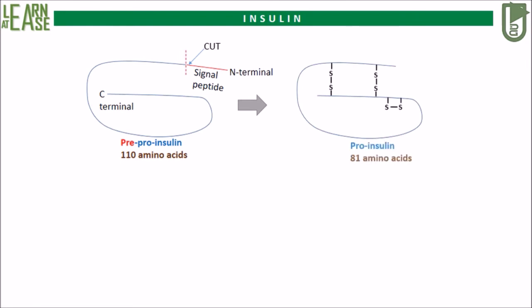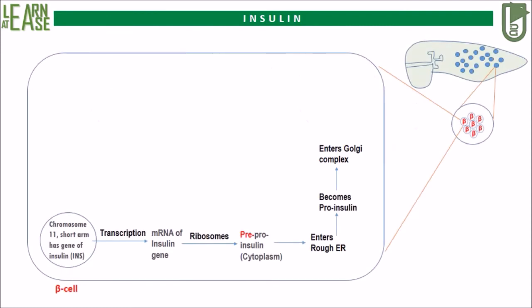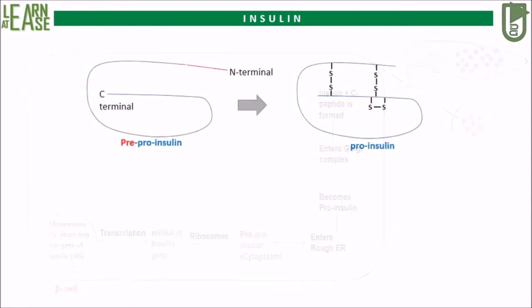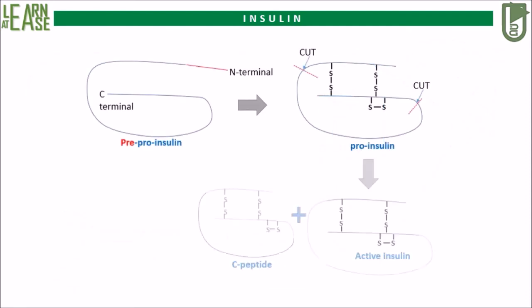Once these modifications occur, it becomes pro-insulin. It is then transported to the Golgi apparatus where it is processed by a series of proteases to form mature insulin. Here the pro-insulin is cleaved at two different locations by proteases, as shown in the animation, to yield C-peptide and mature insulin.